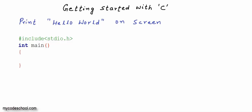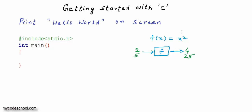A C program is organized in entities that we call functions. You must be knowing of functions in mathematics. Let's take an example: f(x) = x² is my function. You can imagine a function to be a box that will take something inside and give back something else by applying some rules. If we give this function 2, it will give back 4. If we give 5, it will give back 25 — it gives back the square of the number.